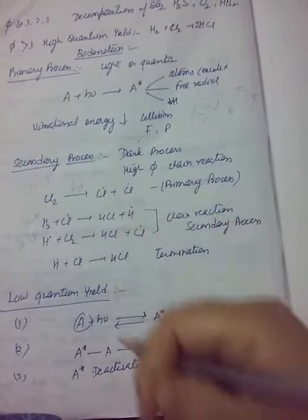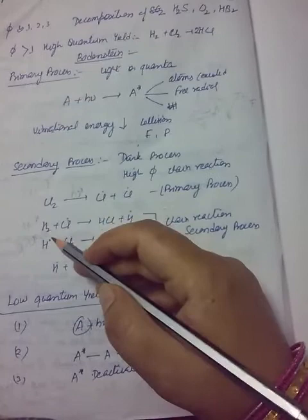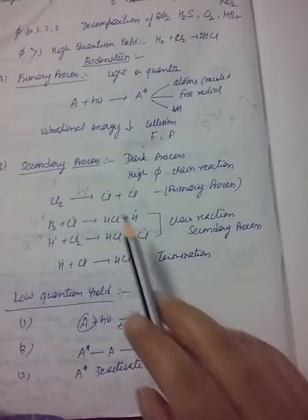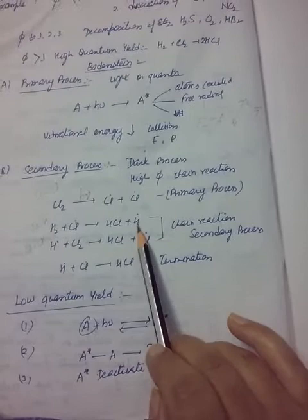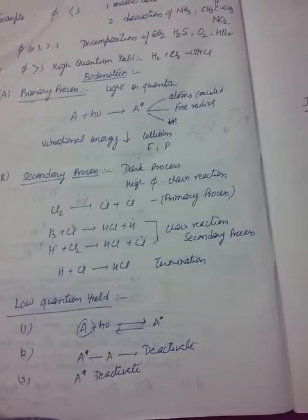This chain reaction means one photon initiates the production of Cl radicals, which then propagates through many cycles without further photon absorption. The number of reacting molecules is therefore very large compared to photons absorbed, giving a very high quantum yield. Finally, two radicals combine — Cl• + Cl• → Cl2, or H• + Cl• → HCl — as termination steps. This secondary chain process explains the very high quantum yield for H2 + Cl2.